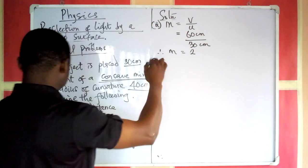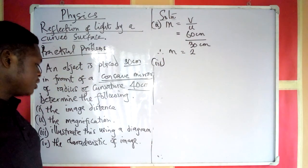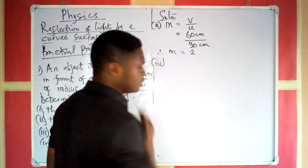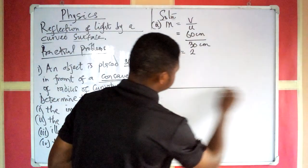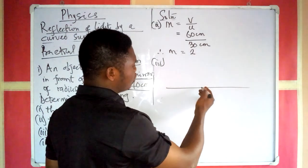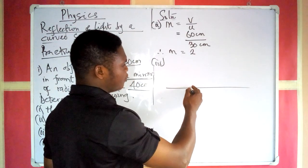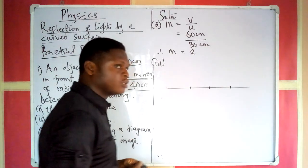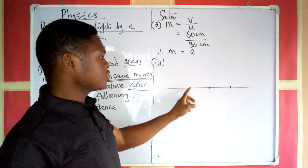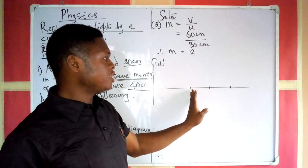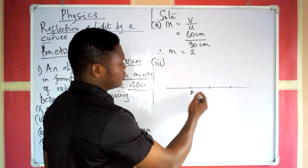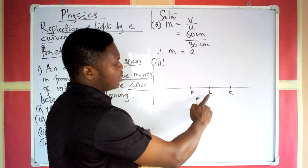The third thing is to illustrate this using a ray diagram. First, draw your principal axis, then locate the key points: the pole, the principal focus, and the center of curvature. If you want an accurate diagram, use your ruler to make a straight line. Mark a point and call it the pole, then measure a distance — it can be 2 cm or 3 cm — to locate F, then the next point will be C, such that F is halfway between the pole and C.